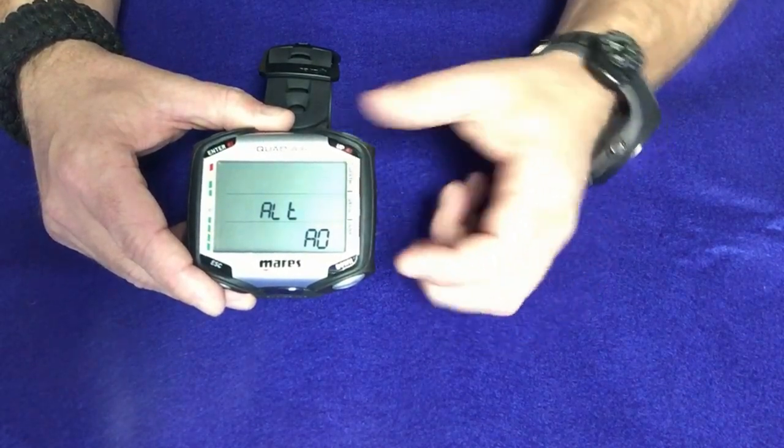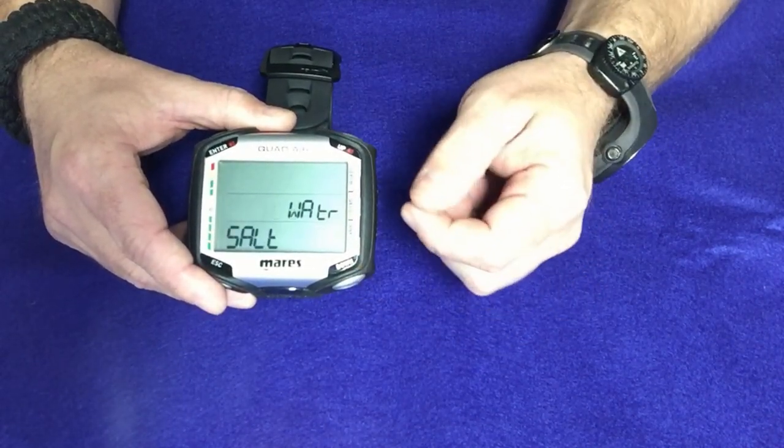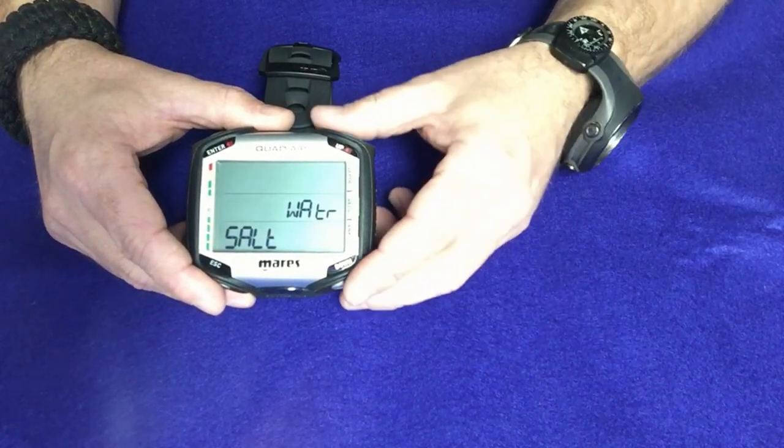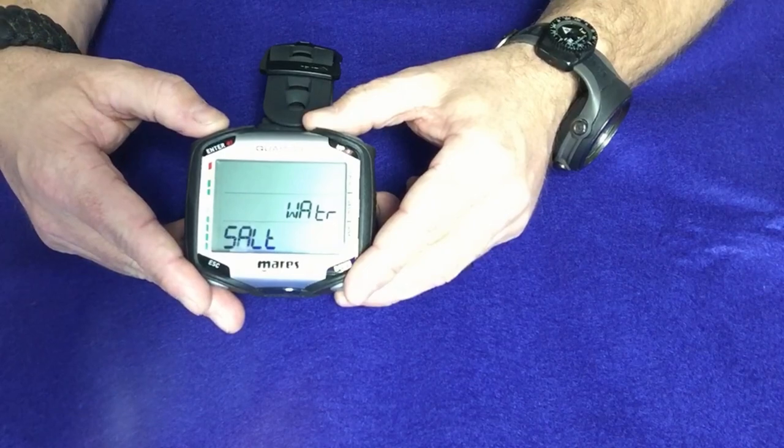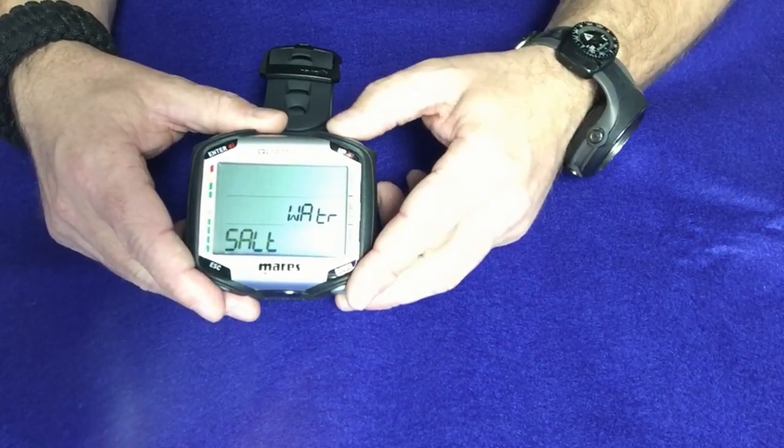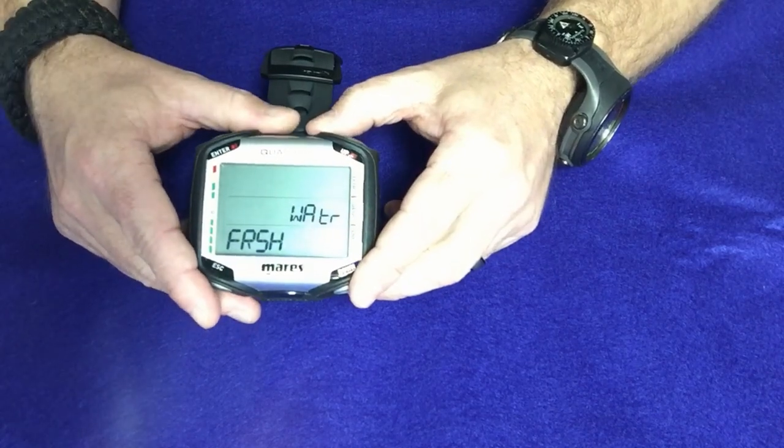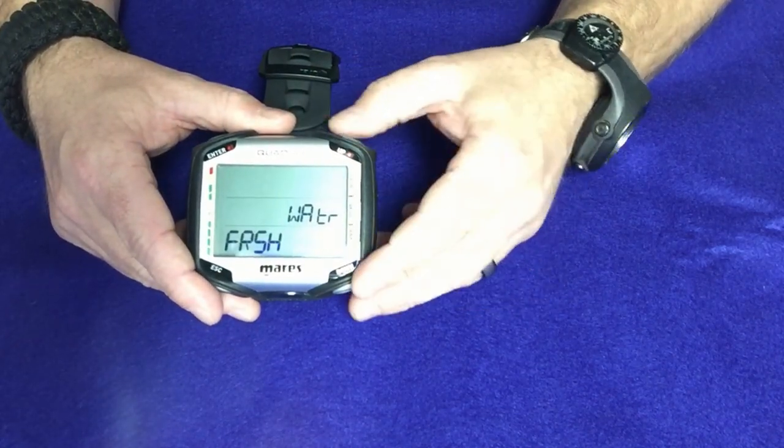I can change the altitude if I need to, maybe if I'm diving at altitude. I can change from either salt water or fresh water. Since I dive a lot here in the lake, I'm going to actually change this over to fresh water. So I'm going to simply hit the enter button, I'll change it over to fresh, and then I'll confirm it by simply hitting the enter button again.